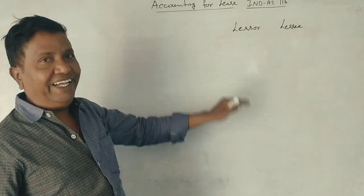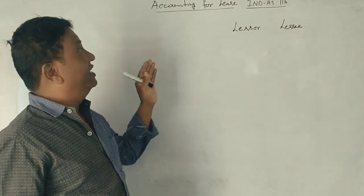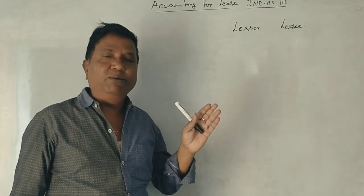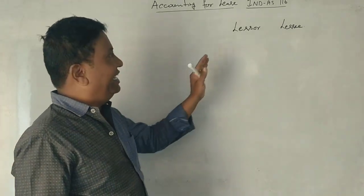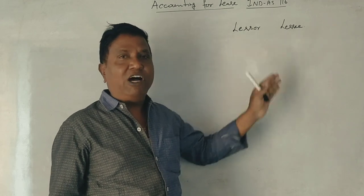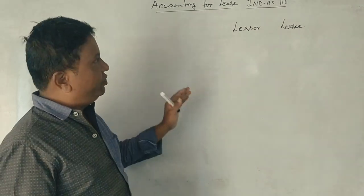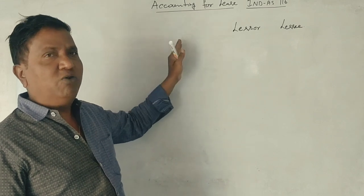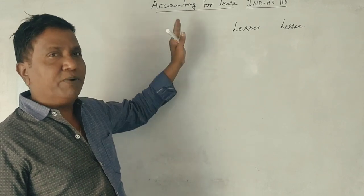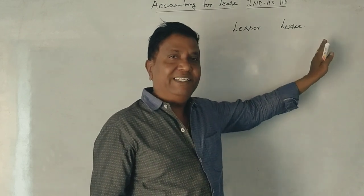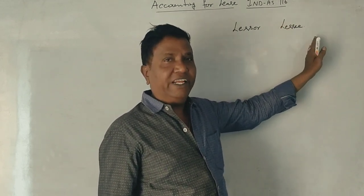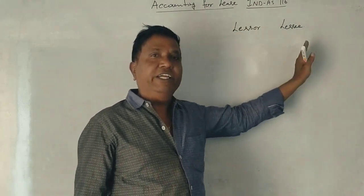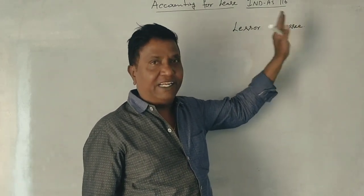So, it is an agreement between two parties. For accounting for a lease, we have to deal with the accounting entries, accounting treatment, and accounting procedure. The lessee is the one who is using the asset and doing business with that particular asset.